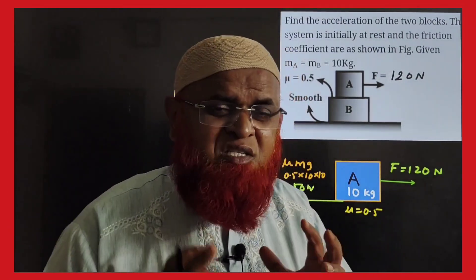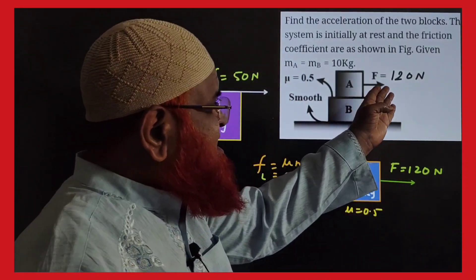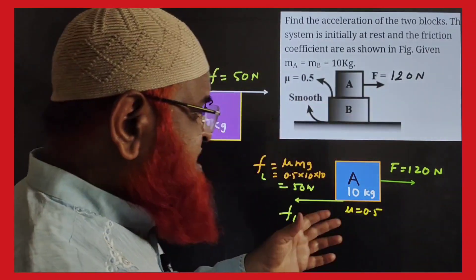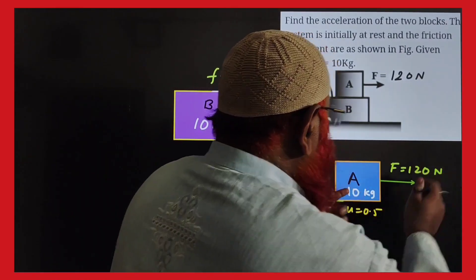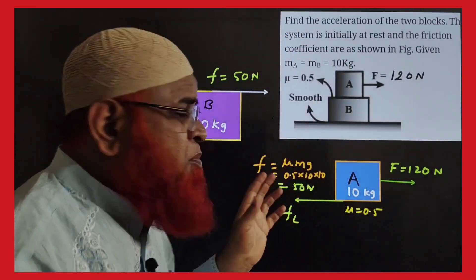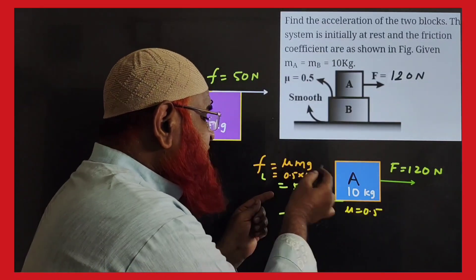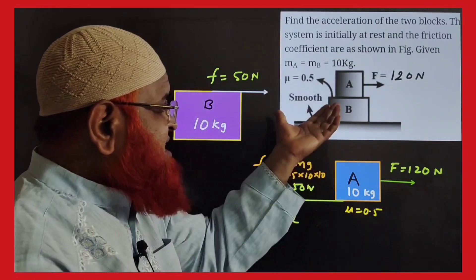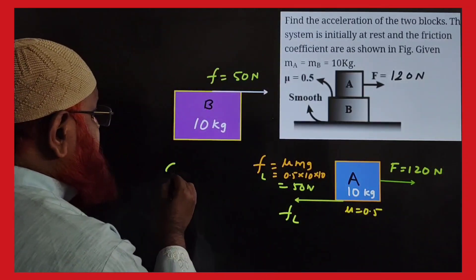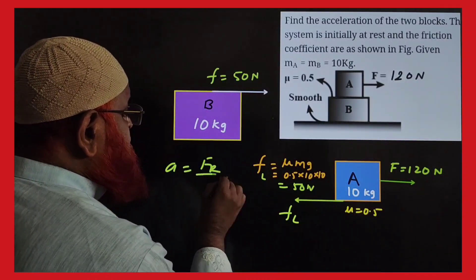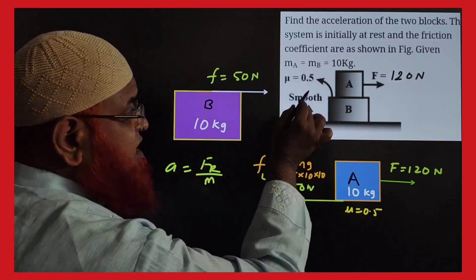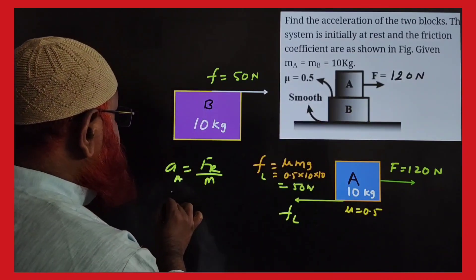My dear students, one more similar type of question, but here the force acting on the upper block is 120 N. The limiting friction between the two blocks, because the coefficient of friction is 0.5, is μmg which equals 50 N acting to the left. So 120 N acts to the right and 50 N to the left. The resultant force for the acceleration of the upper block A is calculated next.